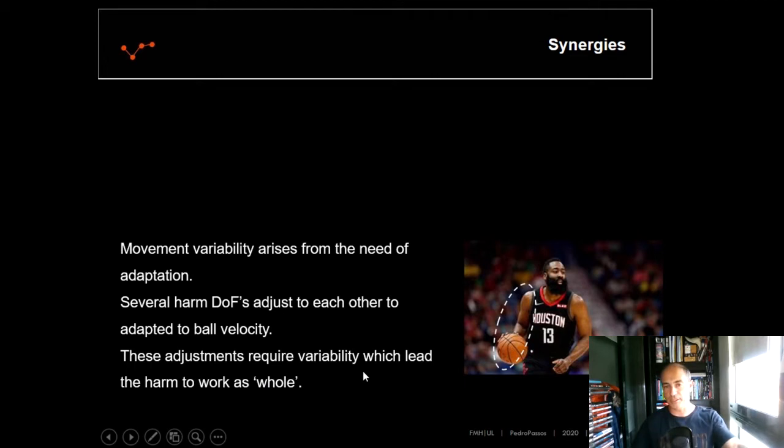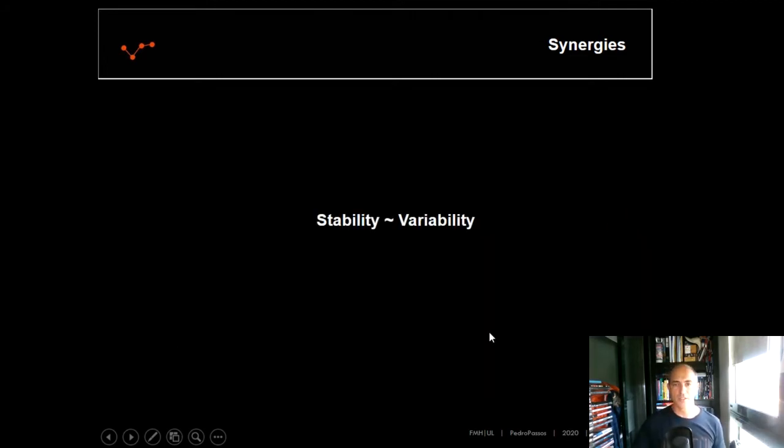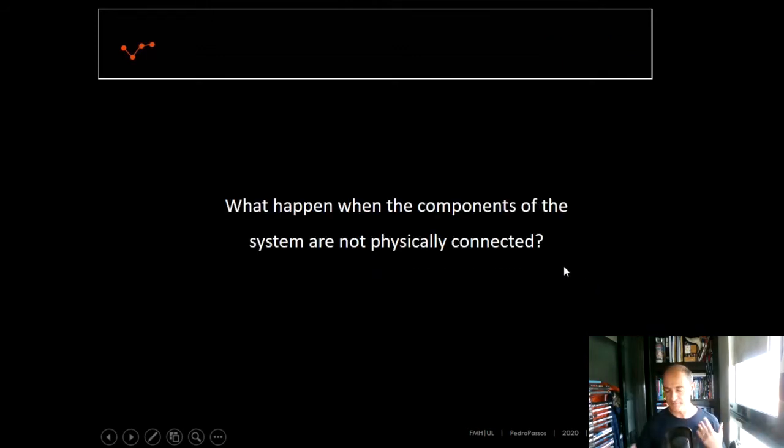So these adjustments require variability, which leads the arm to work as a whole. We have two complementary concepts here. On one side, we have stability of the performance goal. On the other side, we have variability of the task-relevant elements. But now, one question. What happens when the components of the system are not physically connected?